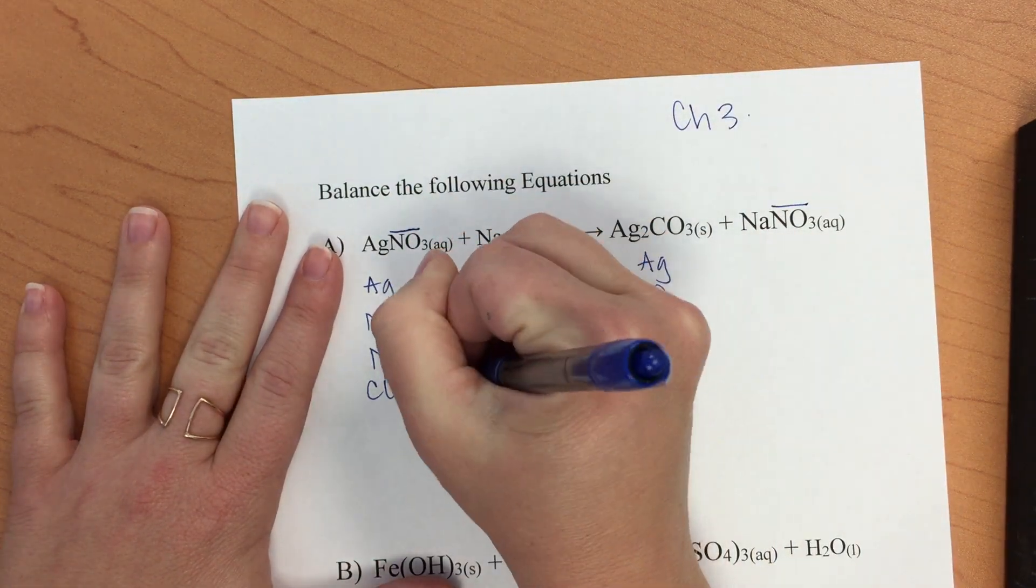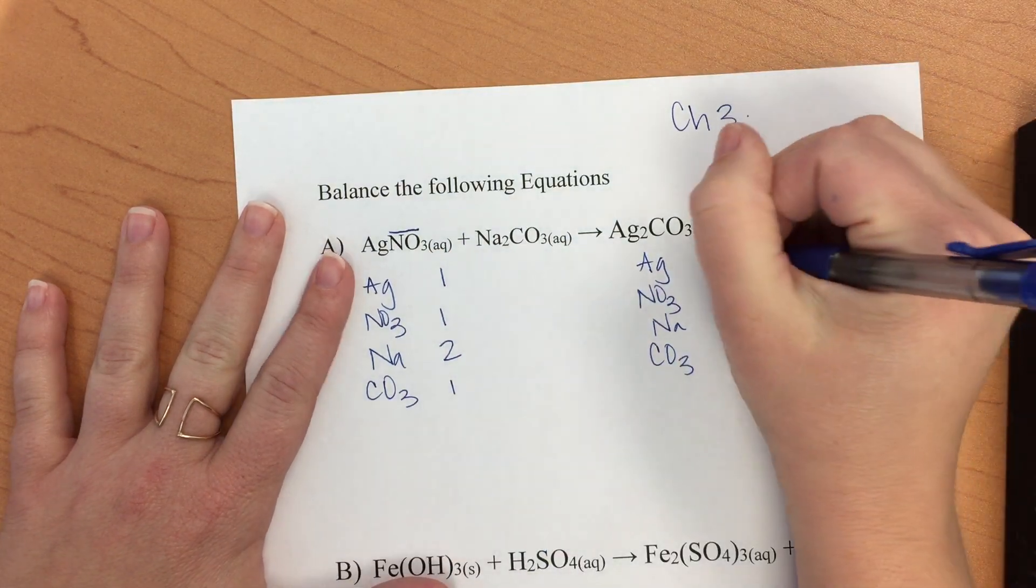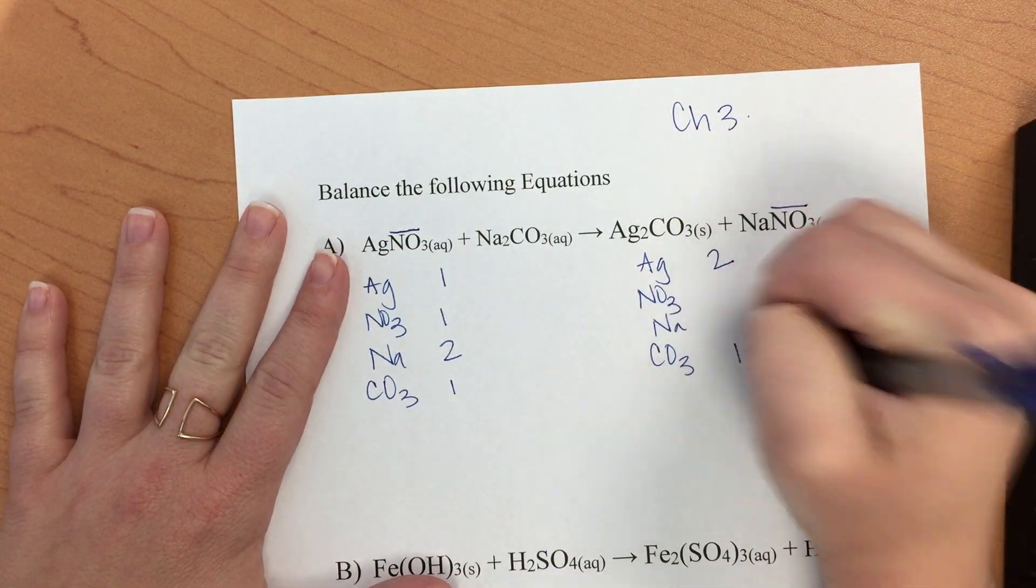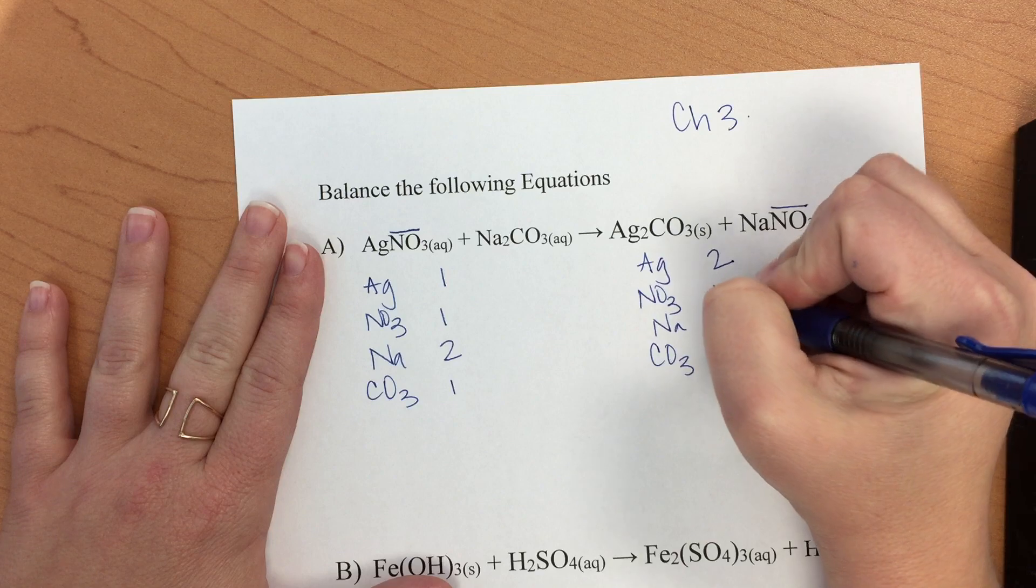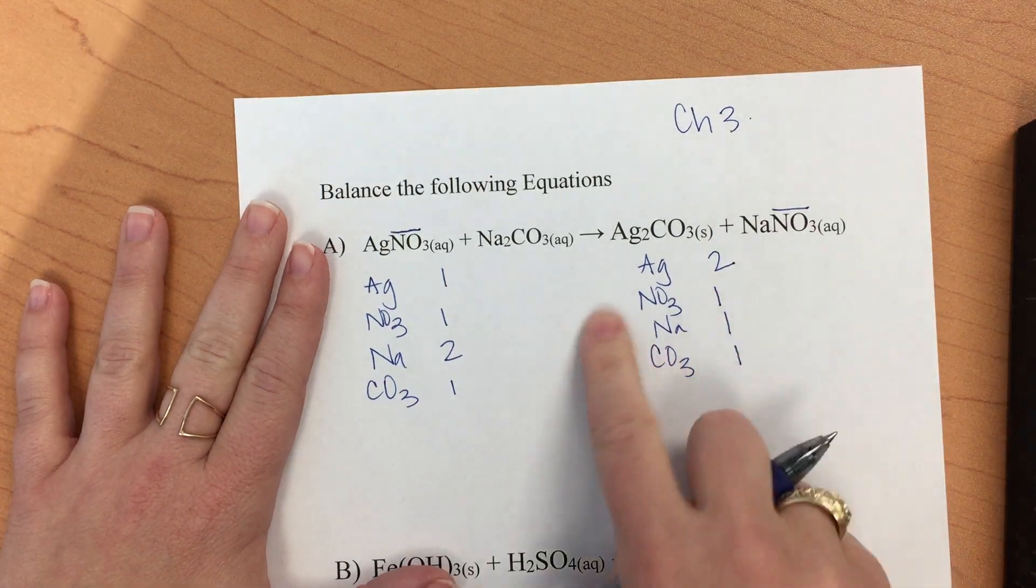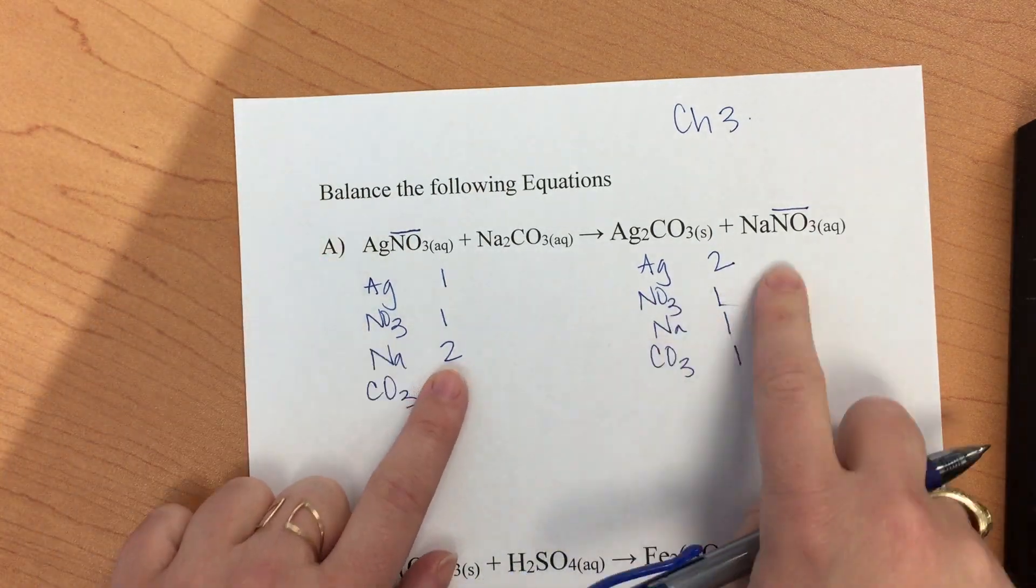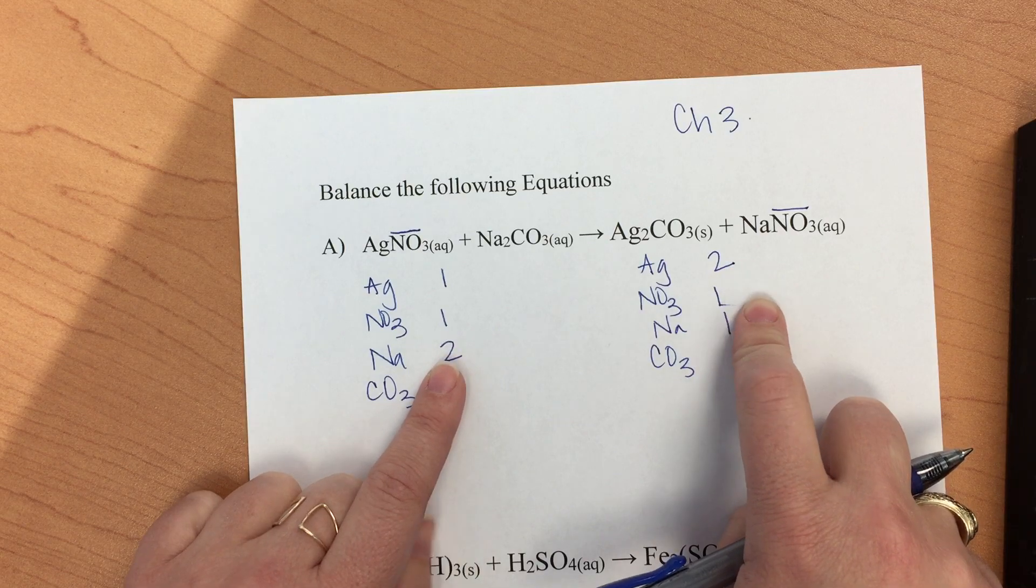We have two silvers, one carbonate, one sodium, one nitrate. One thing we'll notice is that we have two that are unbalanced. We are going to begin by balancing the sodium.